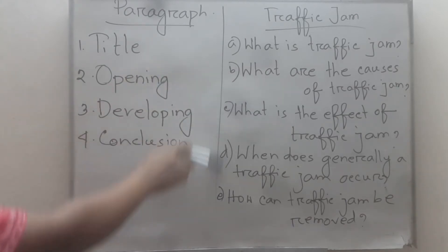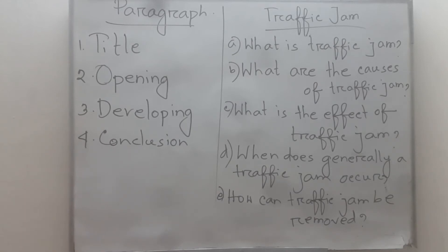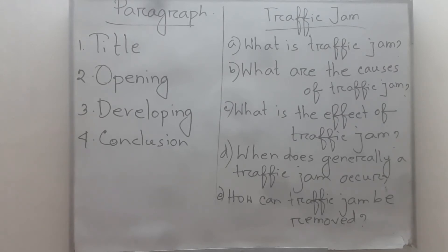Then comes the developing section — that means answering the clue questions. The next clue is: 'What are the causes of traffic jam?' For each question, you must write at least one sentence, and if necessary, you can write two or three sentences. So, for the first answer: 'Traffic jam means a blockade of vehicles on roads and streets. It is an unmoving state of vehicles on the road.'